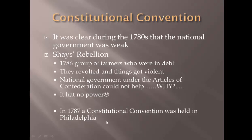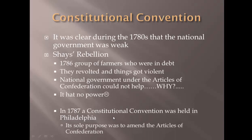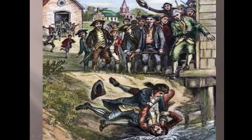Our founding fathers decided to gather in Philadelphia in 1787 and hold a convention to either fix the Articles of Confederation. But what ended up happening was they built a brand new government. The Constitutional Convention was held in Philadelphia, starting in 1787, and it lasted a few years. Its sole purpose was to amend the Articles of Confederation — to alter, change, fix them to make them work. That actually did not happen. They threw the Articles out the window and began to build a new Constitution. That's an artist's depiction of Daniel Shays from western Massachusetts, attacking some townsfolk at the local courthouse.